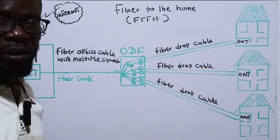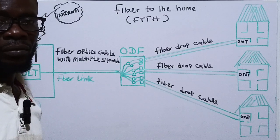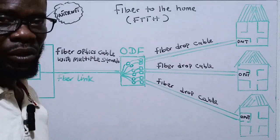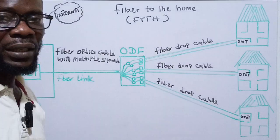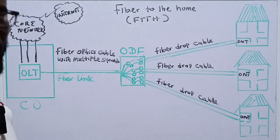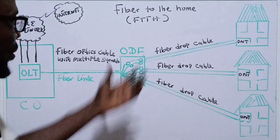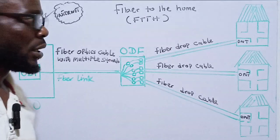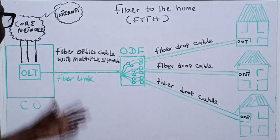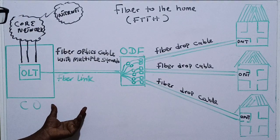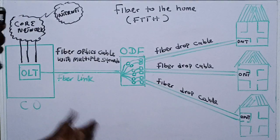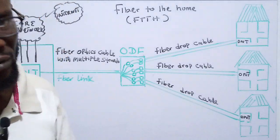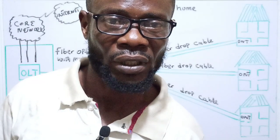From the Optical Network Terminal you link your router. You can also add a switch, run your cables, and enjoy very high-speed internet access. If you liked this video, please share it, and I'll see you in the next tutorial.